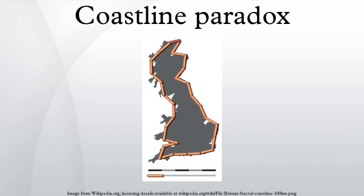The coastline paradox is the counter-intuitive observation that the coastline of a land mass does not have a well-defined length. This results from the fractal-like properties of coastlines. The first recorded observation of this phenomenon was by Lewis Ferry Richardson, and it was expanded by Benoit Mandelbrot.